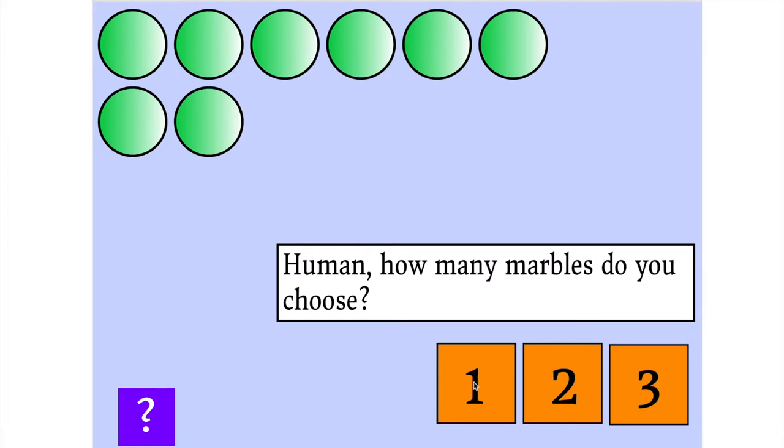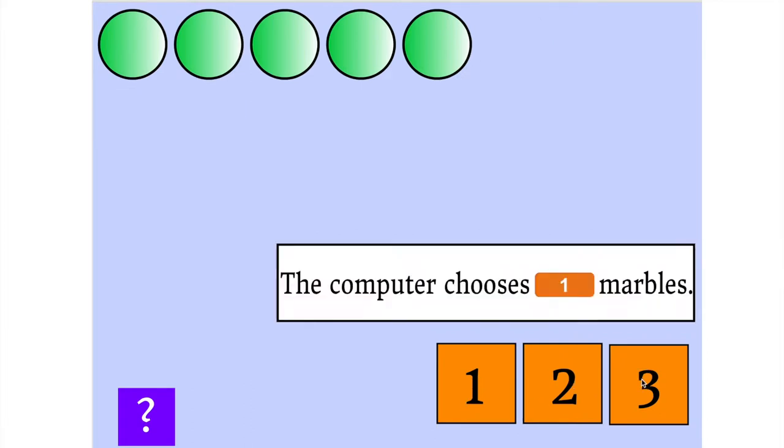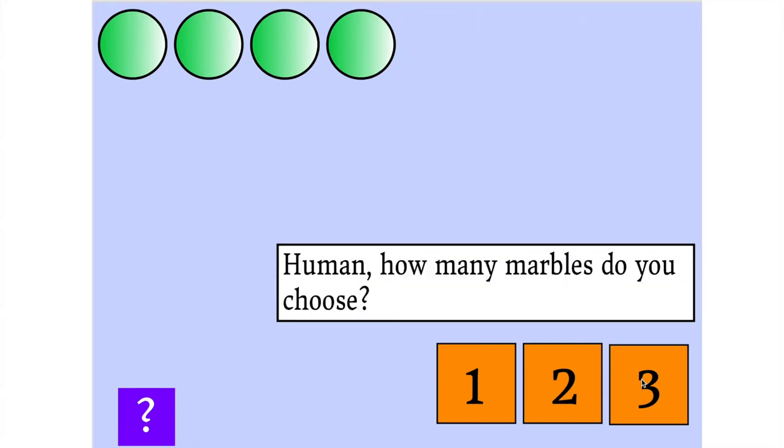Now it's my turn again, so maybe this time I'll take three marbles, and you'll see three marbles disappear. Now the computer just chose one. Now I get to go. Not looking real good for me. Let's say this time I take two.